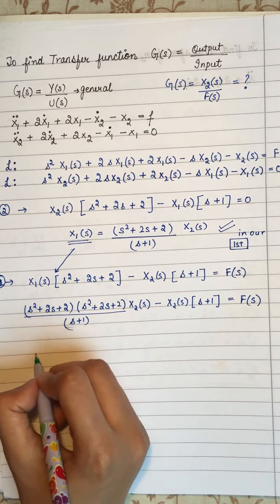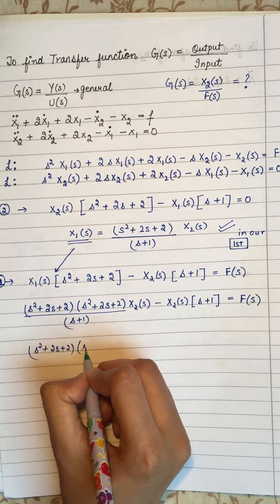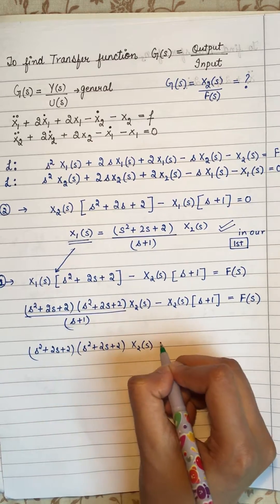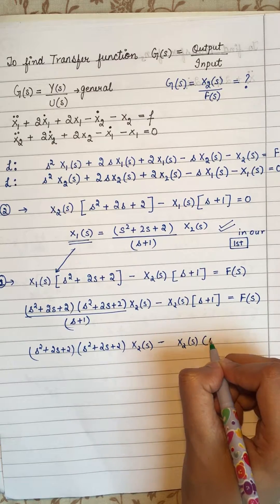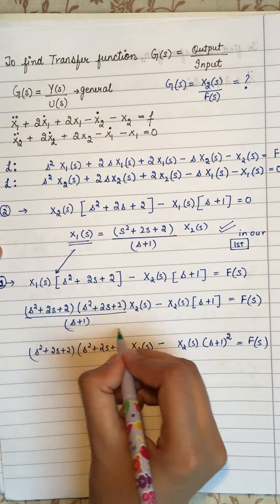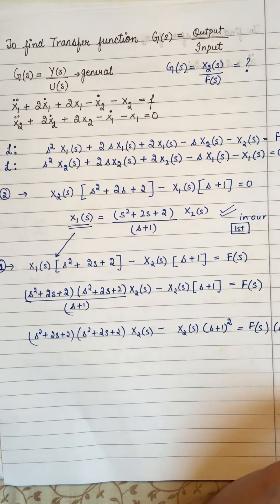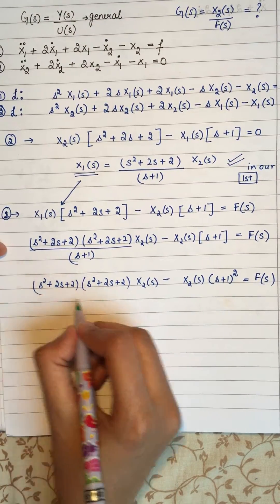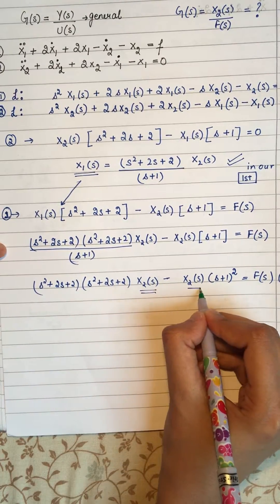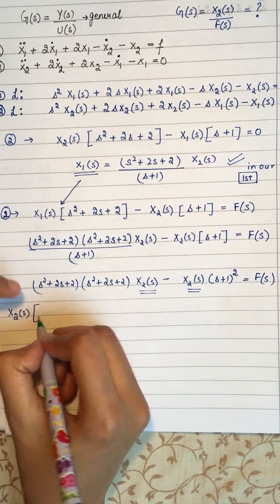So we rewrite it as: (s² + 2s + 2) times (s² + 2s + 2) times X2(s), minus X2(s) times (s + 1)², equals F(s) times (s + 1), bringing the denominator to the right-hand side. We can take X2(s) out as a common factor from the left-hand side.